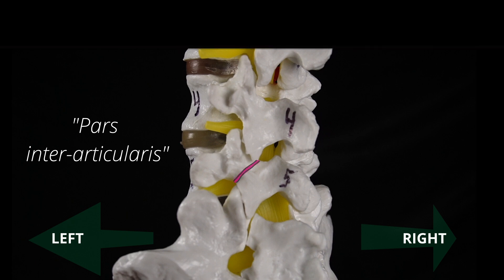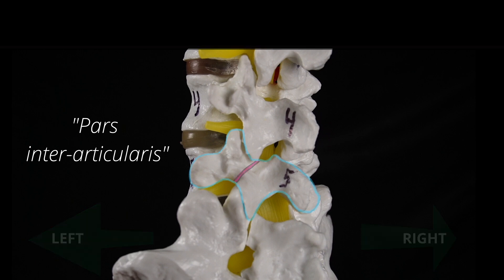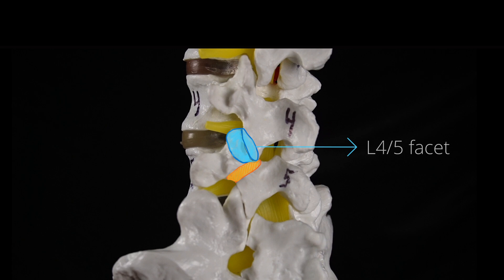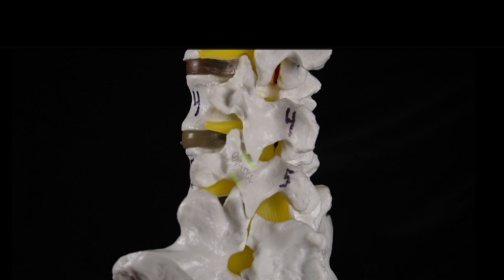Approximately 95% of pars fractures occur at the L5 vertebrae, and most commonly on both sides. Basically, the pars is a narrow strip of bone which connects the L4-L5 facet joint above to the L5-S1 facet joint below. You can think of the pars like a bridge connecting the two joints.